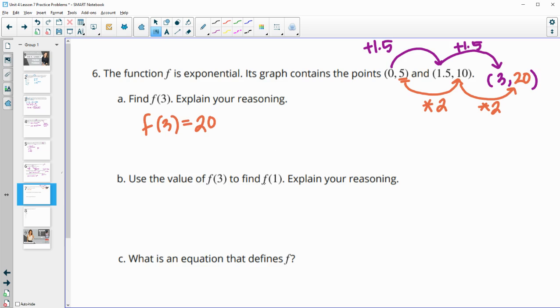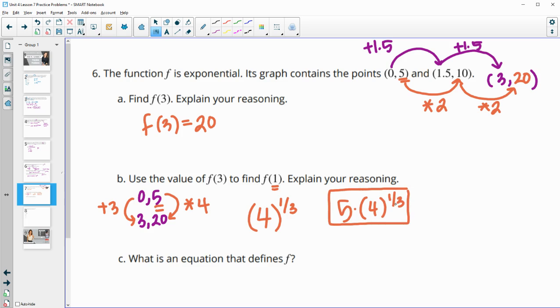Now they want us to use this value to help us find F of 1, because now we know F of 0 was 5 and F of 3 is 20. We can use that to help us get a one-year interval. Our growth factor going from here to here is times by 4 after we go up 3 years. We want to get to just one, so we want to split this into three equal intervals. This growth factor is 4, but we want to split it into an interval of 1/3 to get what our growth factor would be there. This gives us 5, our initial amount, times this growth factor of 4 to the 1/3 power.